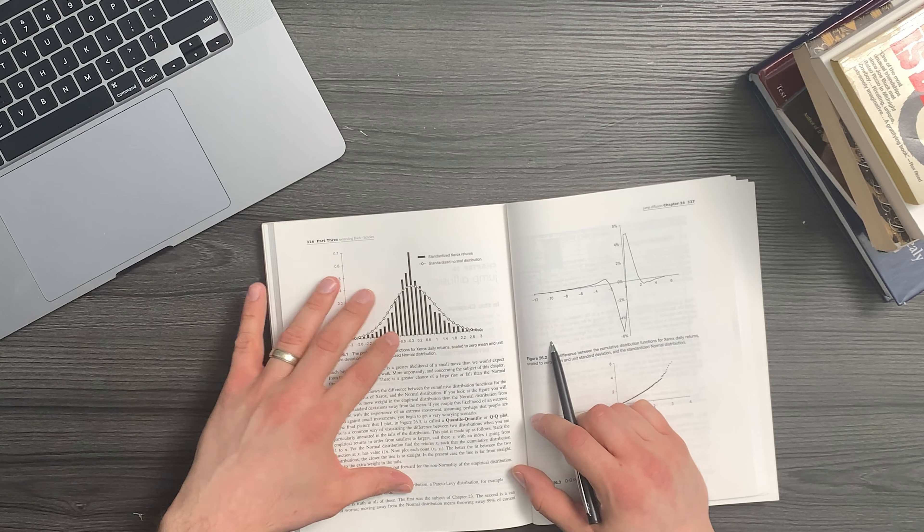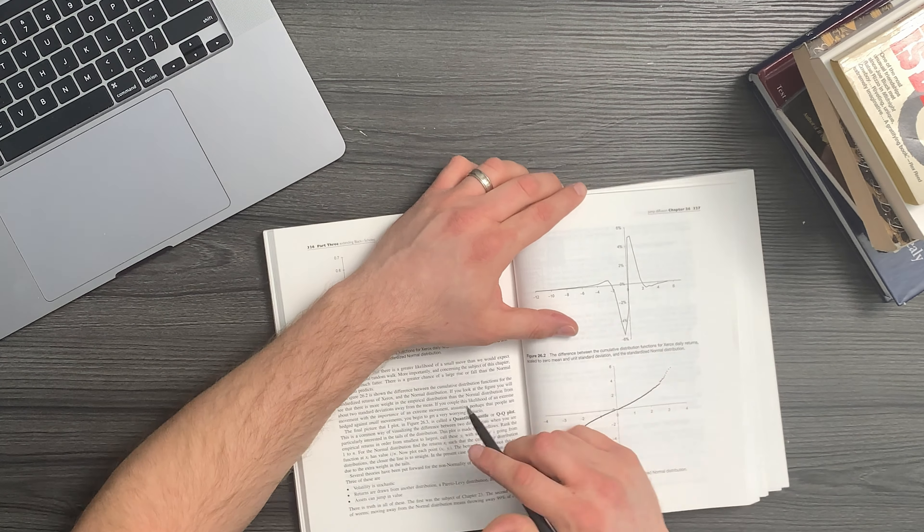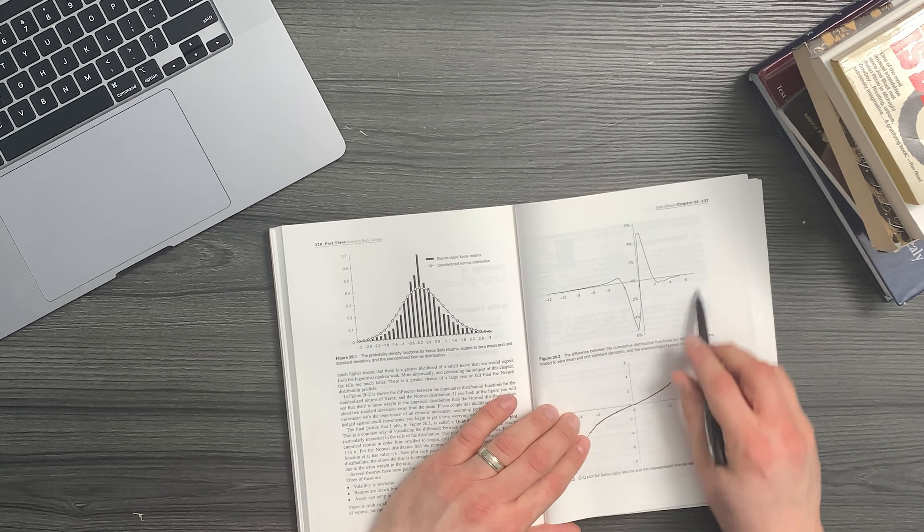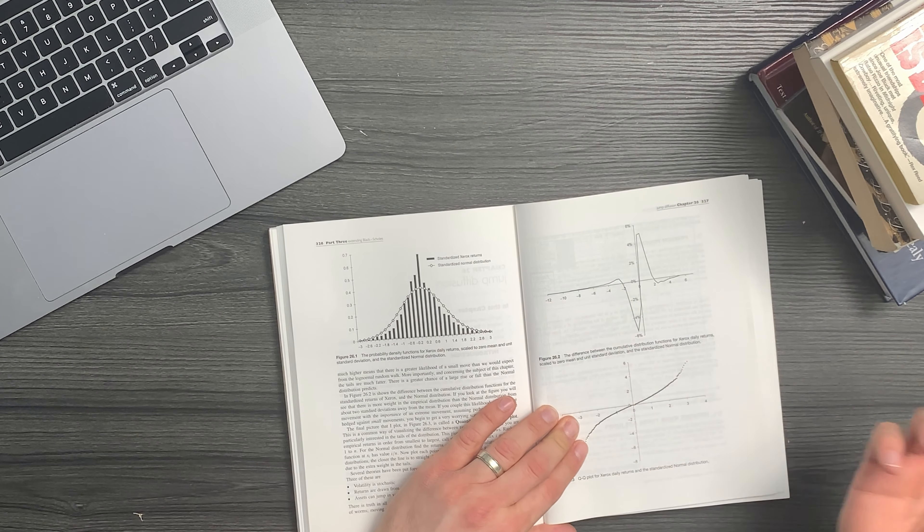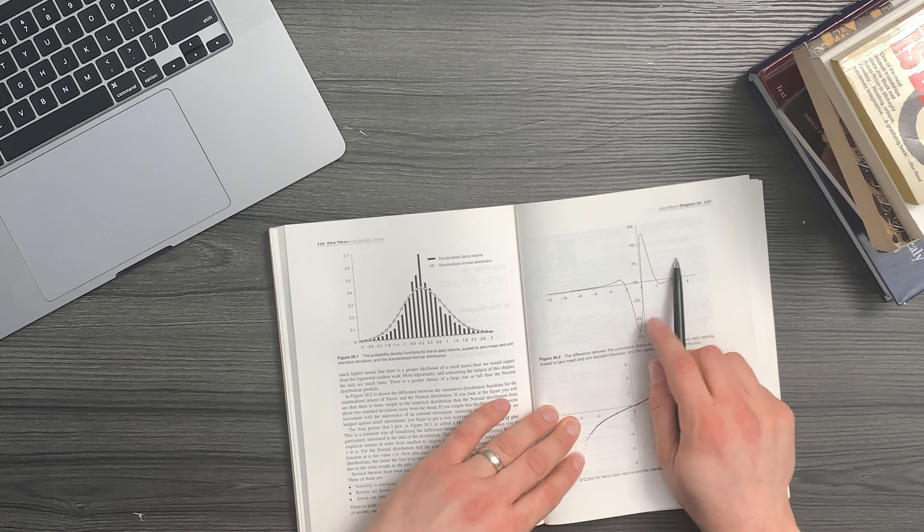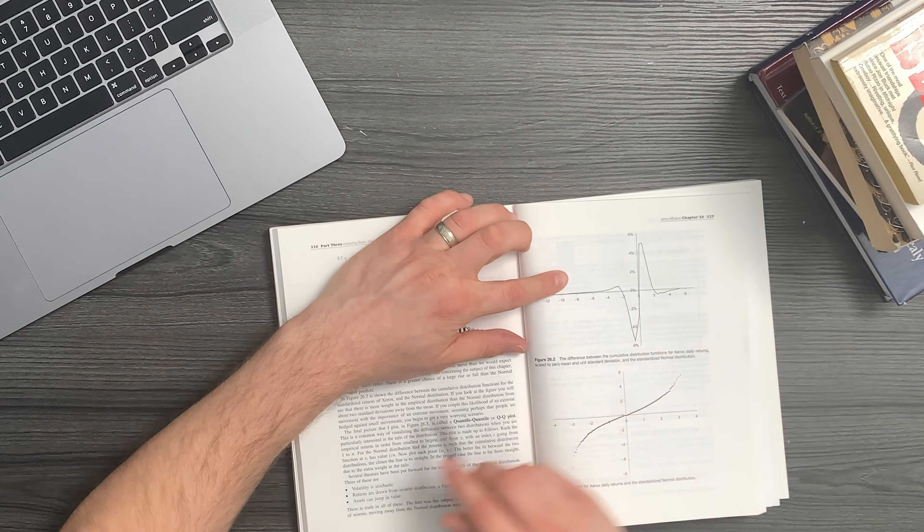What I suggest you do next time you encounter this scenario is the moment it says refer to figure, I don't know, 2.4, you stop reading and you look at figure 2.4—in this case it's 26.2—and you're just looking at this to get like a first impression, and then you read the next sentence.